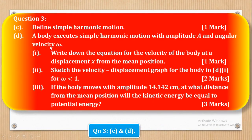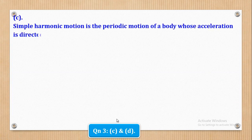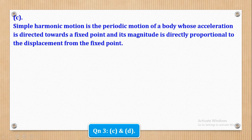Now we shall go to Part C, which says: define simple harmonic motion, for one mark. We shall say: simple harmonic motion is the periodic motion of a body whose acceleration is towards a fixed point, and its magnitude is directly proportional to the displacement from the fixed point. All those key words must be present.